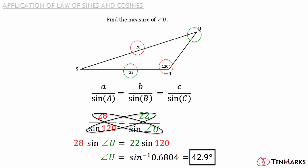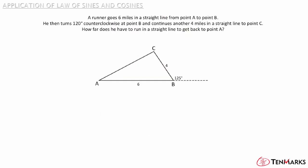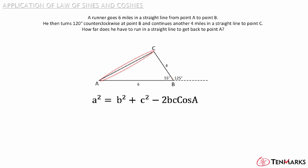Try the following word problem. A runner goes six miles in a straight line from point A to B. He then turns 120 degrees counterclockwise at point B and continues another four miles in a straight line to point C. How far does he have to run in a straight line to get back to point A? You want to find the distance CA. Since it's not a right triangle, you'll need the Law of Sines or Cosines. To test the Law of Sines, you need one side length and its opposite angle measure — unfortunately, you don't have that here, so you'll use the Law of Cosines. Before using it, find the angle opposite side CA: since the angle is supplementary to 125 degrees, subtract 125 from 180 to get 55 degrees.